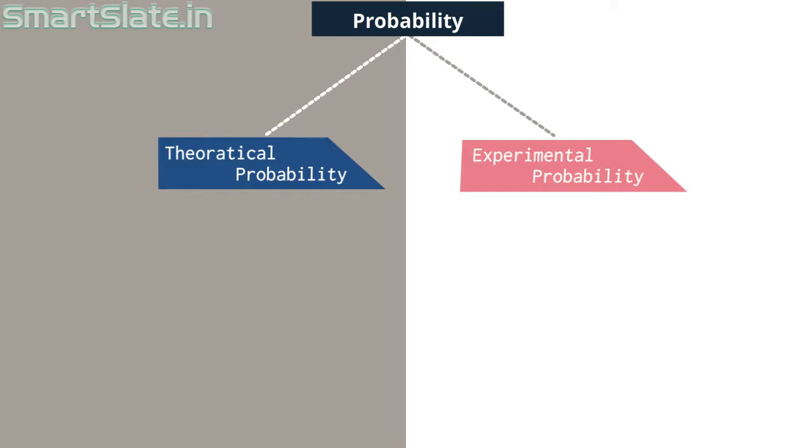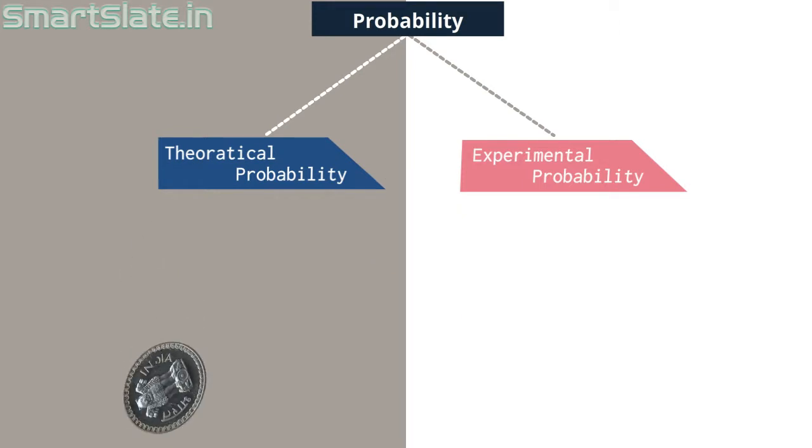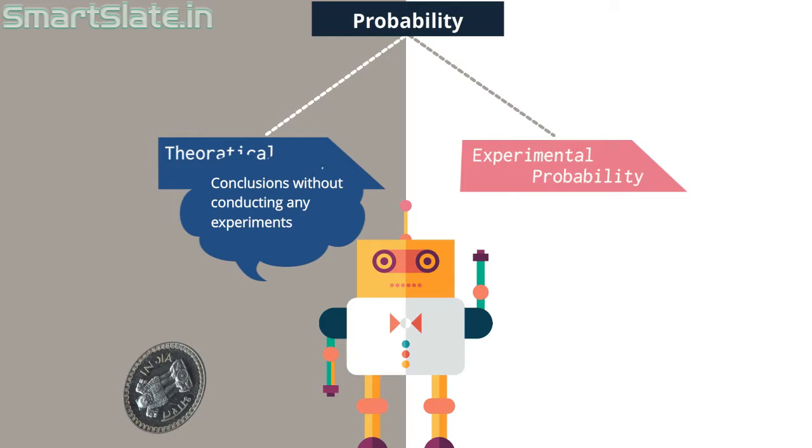Consider the example of tossing a coin. If you toss a coin, what is the probability of getting a head? You would say chances of getting head is 50%. This is a theoretical answer. Chances of getting head or tail is 50-50. One out of two chances you may get head if you toss a coin. Conclusions without conducting any experiment is called theoretical probability.